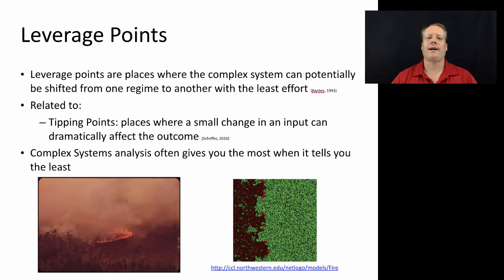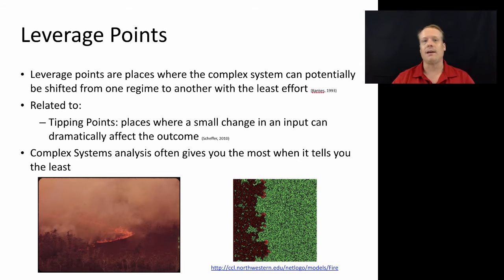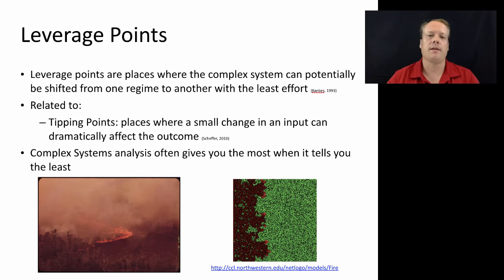Now that we've defined complex systems, emergence, and feedbacks, I want to spend a little bit of time talking about some other terms that we're often going to use during this course — especially to describe some of the advantages of agent-based modeling and why you might want to use it over other methods or in complement to other methods.